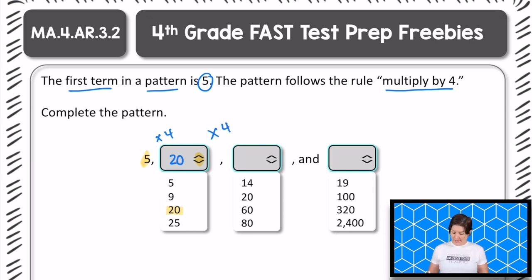Yeah, it's 80. So we would click this drop-down menu to show us all of our answer choices and select 80. Okay, so 80 is our third term.